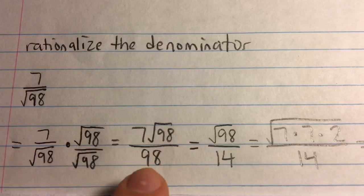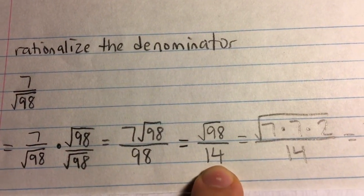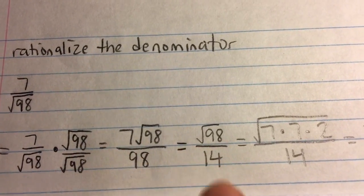you could divide both numerator and denominator by 7. 98 divided by 7 is 14 and the 7 cancels out.